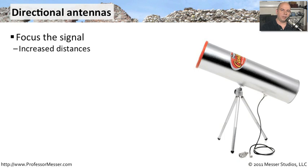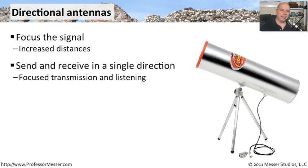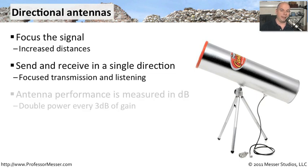A directional antenna will be the perfect choice for focusing that signal. This is a picture of what is commonly called a can antenna, because it takes the signal and effectively sends it right through that can out the other side. Now you have a very focused signal coming out of your access point. It can send information in a very focused direction and also listens in that very focused direction. That way, you can have other interference that might be behind you move down to a lower level, and your signal therefore becomes much easier to hear.